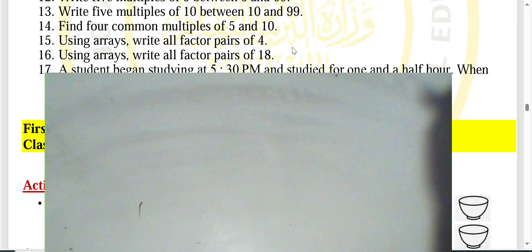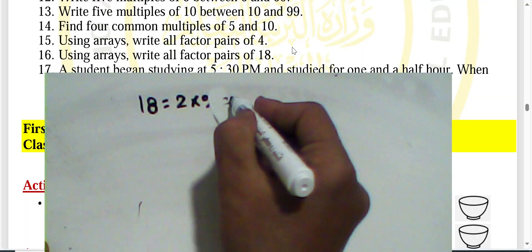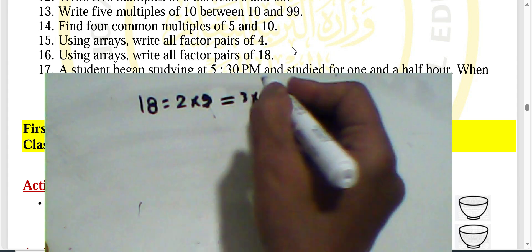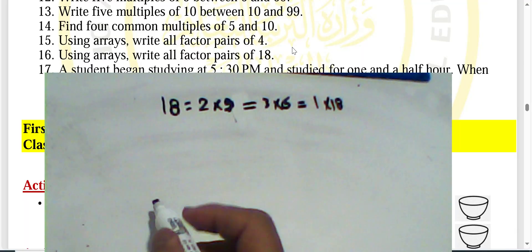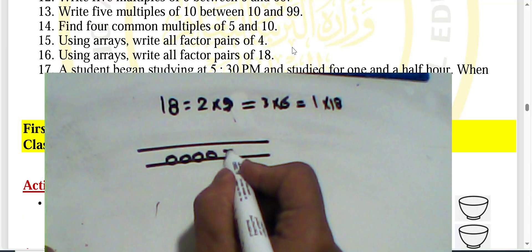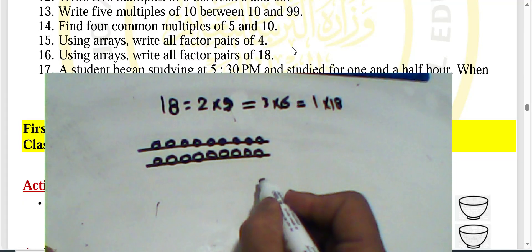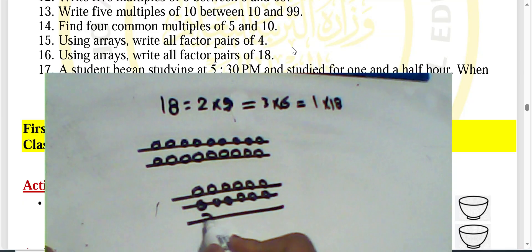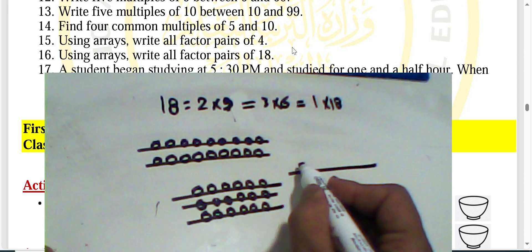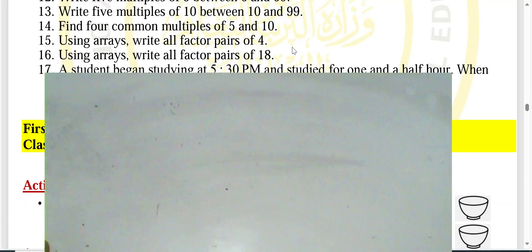Question sixteen: use arrays to find the factors of eighteen. We know eighteen equals two times nine, three times six, and one times eighteen. You can draw two rows of nine, three rows of six, or one row of eighteen elements.